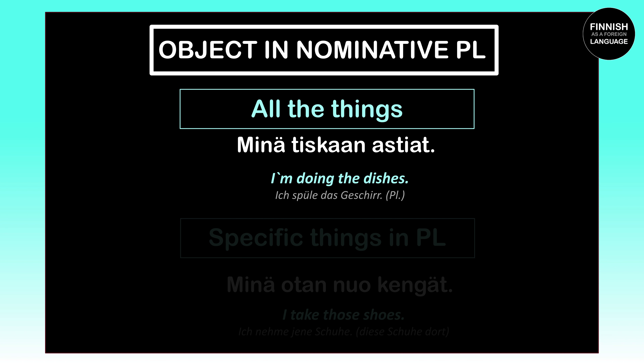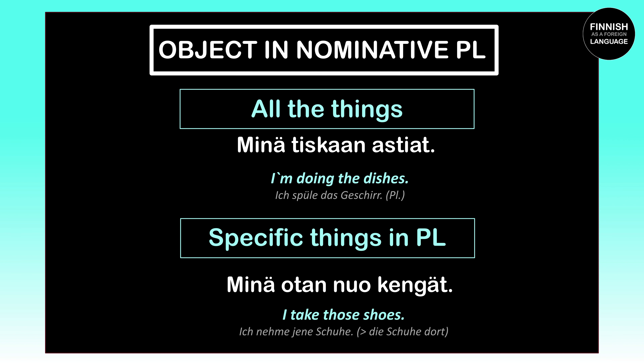Now the object can also appear in nominative plural. 'Minä tiskan astiat' means 'I'm doing the dishes.' The key word is 'astiat,' the nominative plural of 'astia,' meaning 'dish' — in the sense of spoon, plate, and so on. Since we want to say we are cleaning all the dishes we just used, we use the nominative plural. Another example: 'Minä otan nuo kengät' means 'I take those shoes.' Since I know exactly which shoes I'm going to take, we use the nominative plural — 'kengät.'